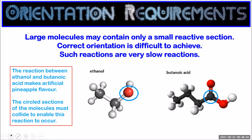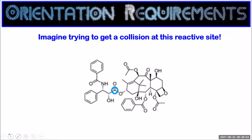Not every molecule is small like A or BC. Large molecules might contain only a very small reactive section, and that means it's really difficult to get correct orientation. Let's have a look at the reaction between ethanol and butanoic acid — the reaction of these two makes an artificial pineapple flavouring. The sections circled in blue have to collide to enable this reaction. Imagine those molecules spinning and tumbling as they move around — it's really unlikely that the right parts will ever meet, making this reaction really slow.